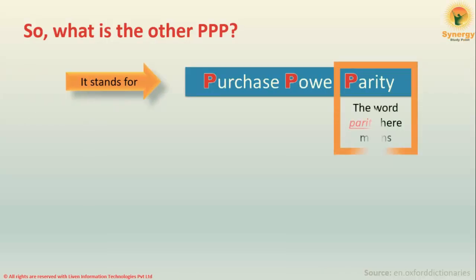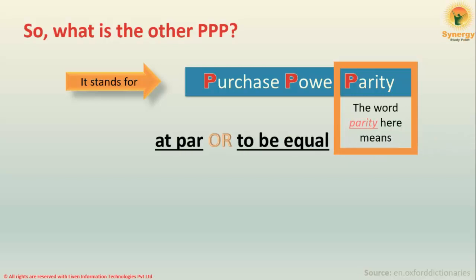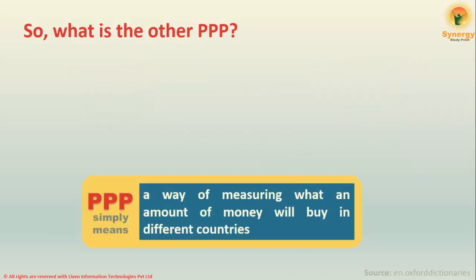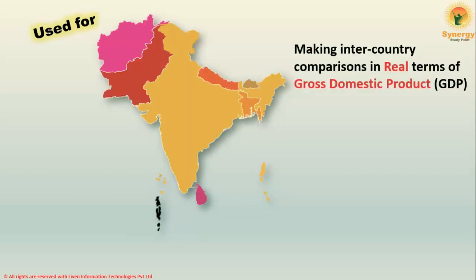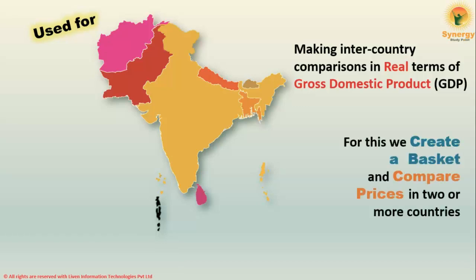The word 'parity' here means at par or to be equal. PPP simply means a way of measuring what an amount of money will buy in different countries. It is used for making inter-country comparison in real terms — that is, in real terms of gross domestic product (GDP). For this, we create a basket of goods and services and compare prices in two or more countries.